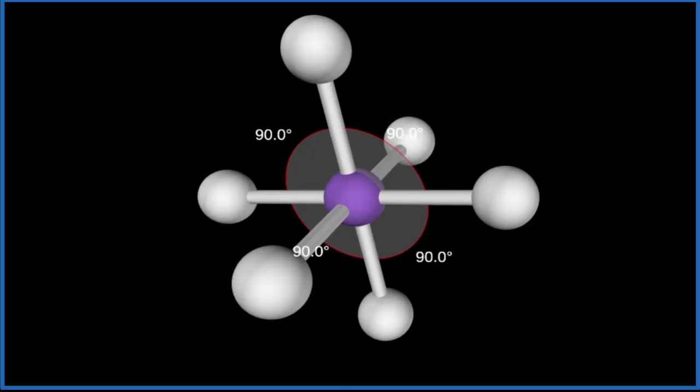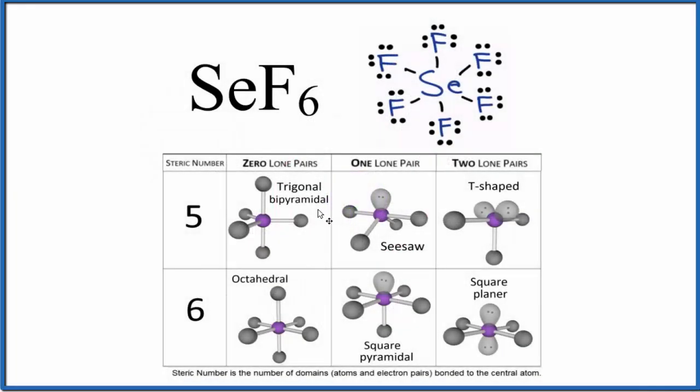So let's go back to our Lewis structure. And we could also use the AXE notation to figure out the molecular geometry for SeF6. A, that's the central atom. That's the selenium. X, that's the number of atoms bonded to that central atom.